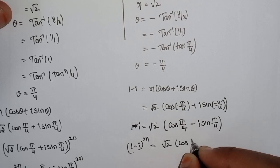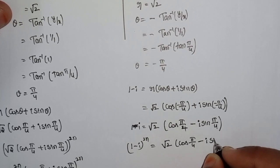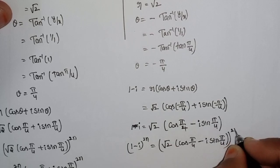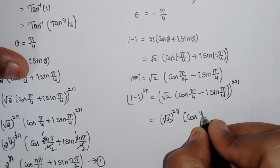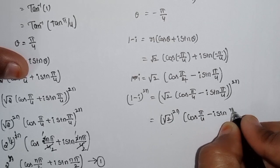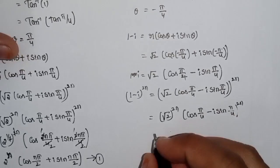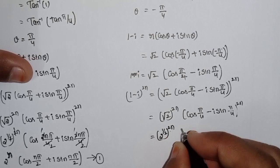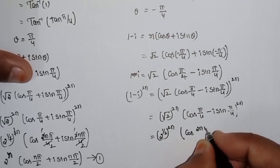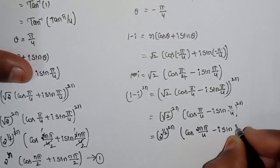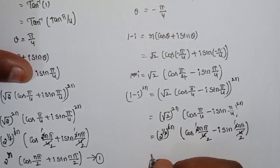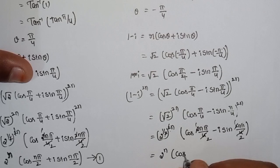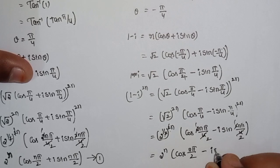Raising to power 2n: (1-i)^2n = (√2)^2n · (cos(π/4) - i sin(π/4))^2n. Applying De Moivre's theorem, 2n · π/4 = nπ/2, the 2s cancel. So (1-i)^2n = 2^n · (cos(nπ/2) - i sin(nπ/2)). This is Equation 2.